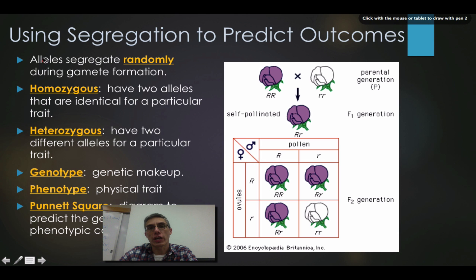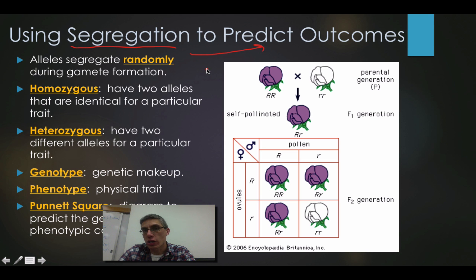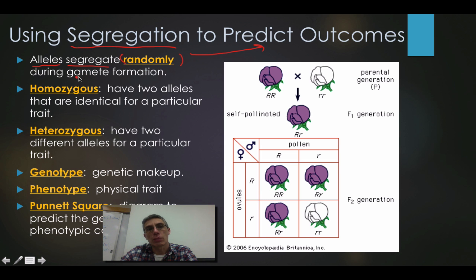The idea of segregation is going to be really important when it comes to our ability to predict outcomes from the various genetic crosses we're going to perform in class. Those alleles — in other words, those varieties of that gene — will segregate or separate randomly. This random separation is going to occur during gamete formation. The gametes are actually the eggs produced by the female or the sperm produced by the male.